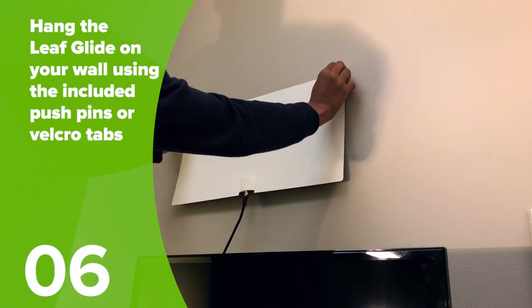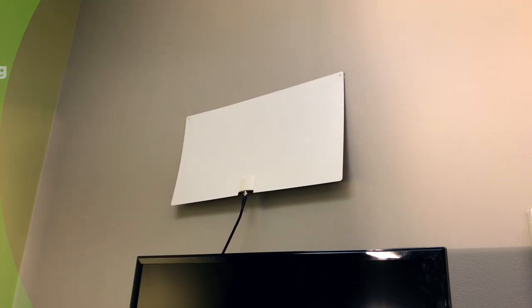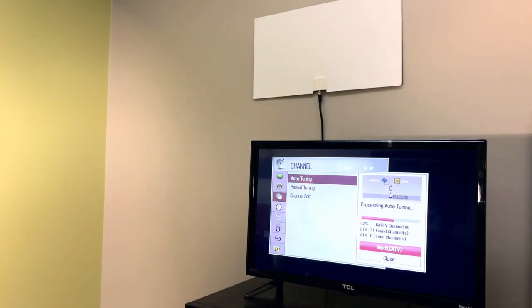Hang the antenna on your wall using either the Velcro tabs or the push pins. Finally, perform a channel scan on your television.